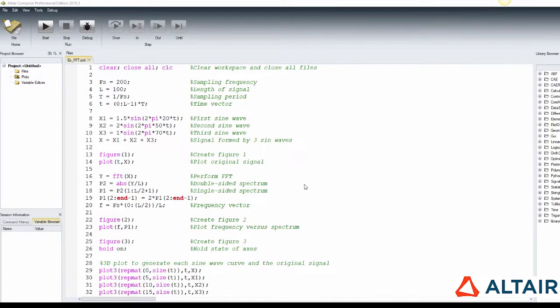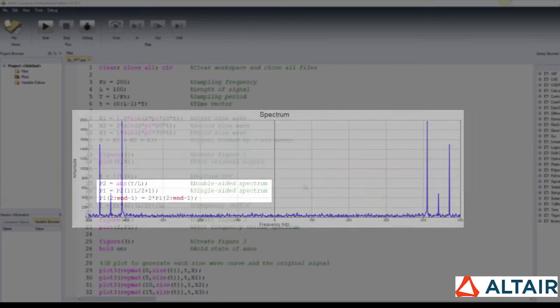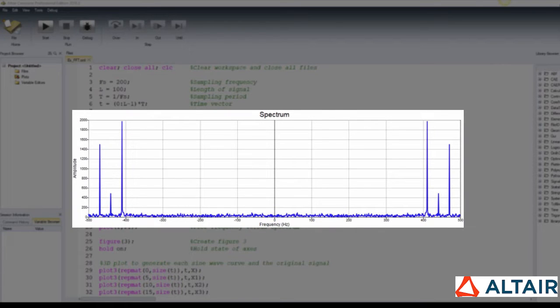The FFT result is usually returned as double-sided, ranging from minus the maximum frequency to the maximum frequency. But most real-world applications use only the positive half of the frequency spectrum, which means that it's single-sided. The spectrum of a real-world signal is symmetrical, and that's why the negative frequency information is redundant.